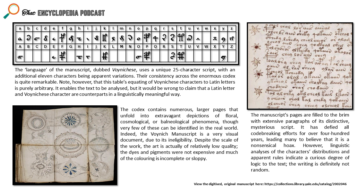Will thinks it might be a hoax but possibly one of the best hoaxes of all time — potentially the work of multiple people. His personal theory is that a group of monks were bored in an abbey somewhere in Italy and in their free time started with well-defined characters and had some sort of cipher system to choose them — weighted in their distribution but without assigning meaning — and just worked on it in their spare time. He has no evidence for this, but neither does anyone else.